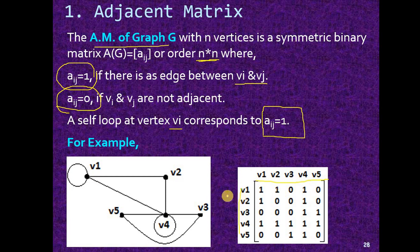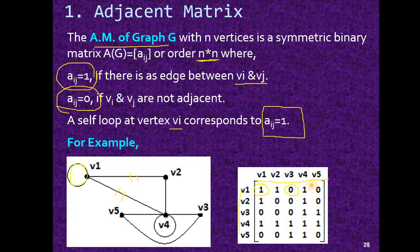Now we will find the elements. For v1 to v1, there is a self-loop, so we will write 1. From v1 to v2, there is a direct edge, so we will also write 1. From v1 to v3, though there is a path between v1 and v3, there is no direct edge, so we will write 0. For v1 to v4, there is a direct edge, so we will write 1. For v1 to v5, there is no direct edge, so we have written 0.